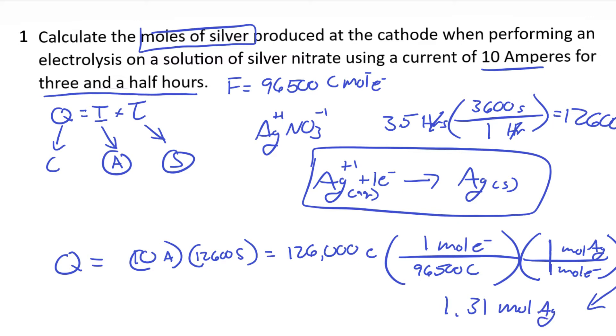And again I like doing the math this way because I can see Coulombs cancel Coulombs, moles of electrons cancel electrons. And what I'm left with is moles of silver which is exactly what they wanted. So that would answer that question.